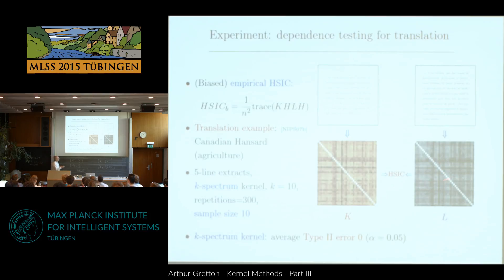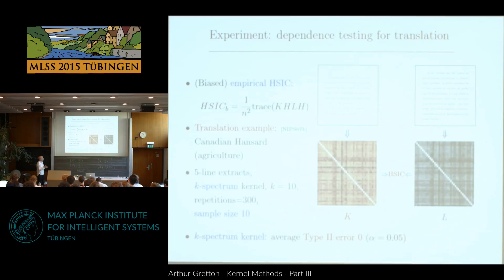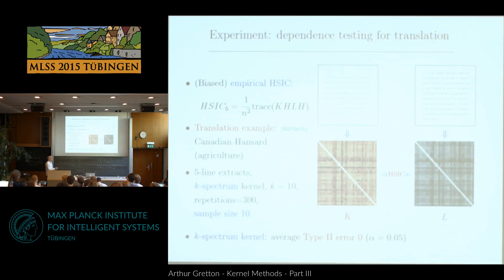Each little square in the K matrix is the kernel between one fragment of English and another fragment of English. The corresponding square in the L matrix is the kernel between the matching two French fragments. The kernel I use is a spectrum kernel, which counts the number of substrings that match in these fragments of text. It allows for wildcards and I used substrings of length up to ten. There's software that does a clever dynamic programming trick to compute these efficiently.